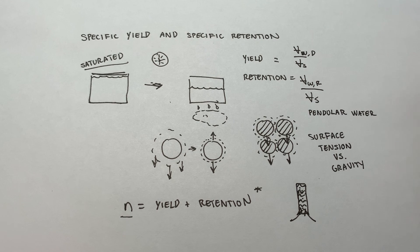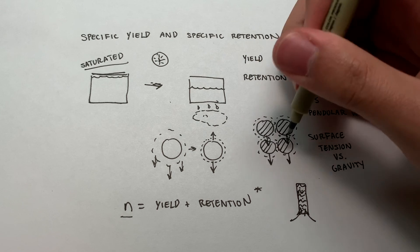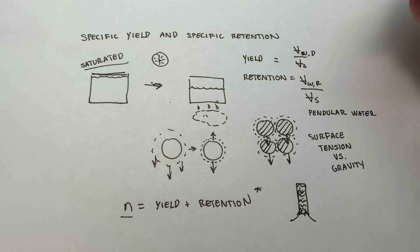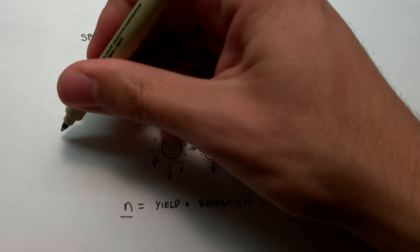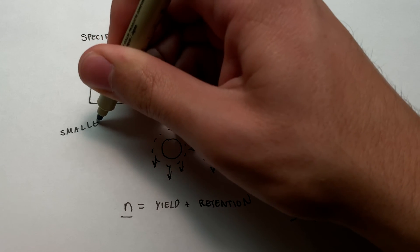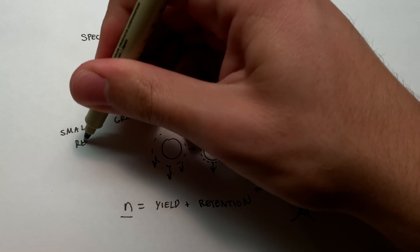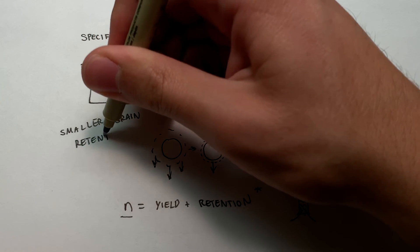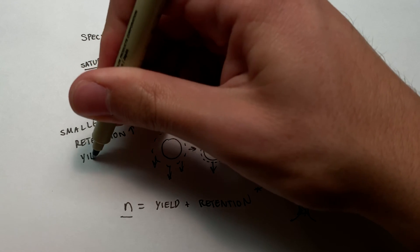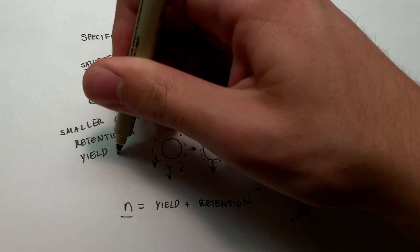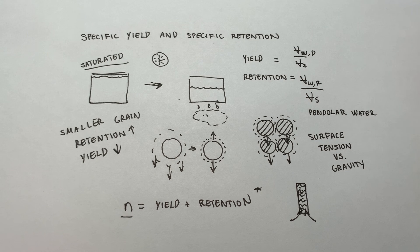And this is an important final note to make, because grains, if you have more smaller grains, you're going to have a larger surface area of grains within that sample. Smaller grain size leads to a higher specific retention and a lower yield. So smaller grain, just make that a note, that's going to raise your retention and drop your yield. So things like clays and silts are going to have higher retentions and lower yields than things like sands and gravels.